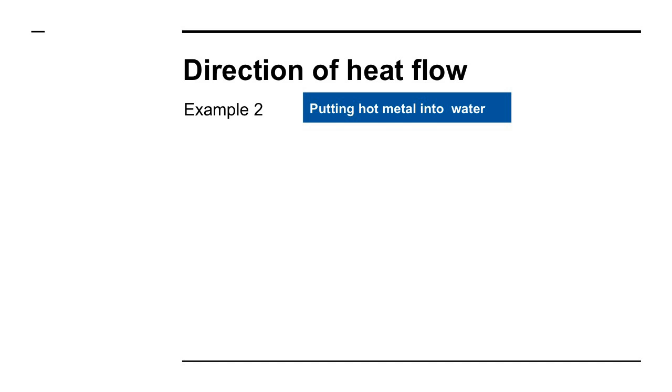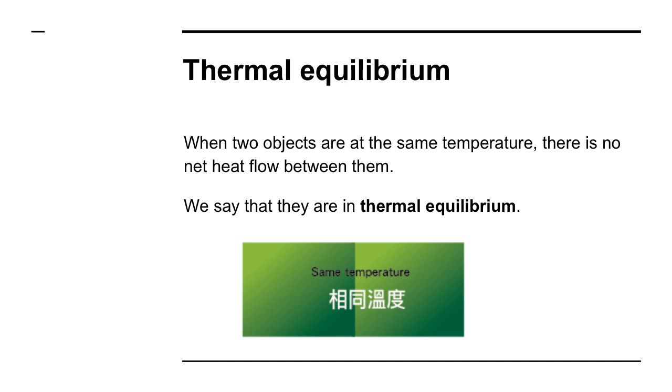When two objects are at the same temperature, there is no heat flow between them. We say that they are in thermal equilibrium.